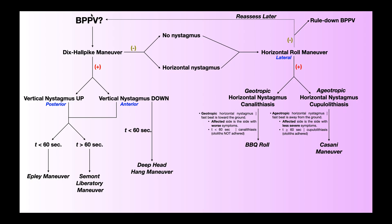Let's suppose that you have a patient that presents with dizziness and you want to determine whether or not they have BPPV. The first special test you should perform is the Dix-Hall-Pike maneuver. A positive Dix-Hall-Pike maneuver is defined as the reproduction of vertical nystagmus, whether it's up or down, after the maneuver is done.